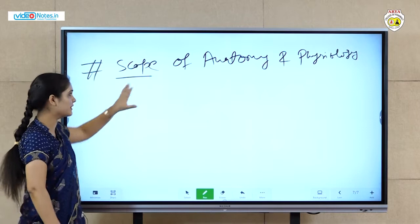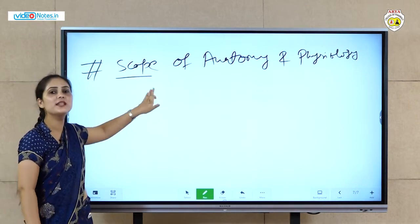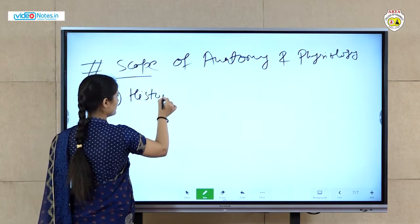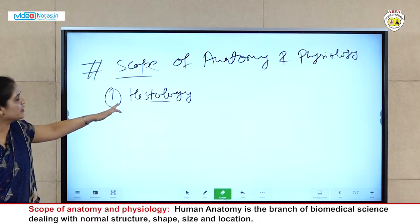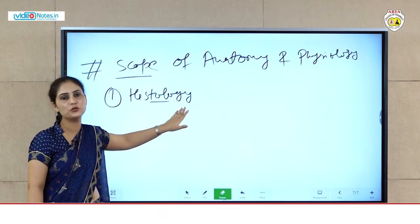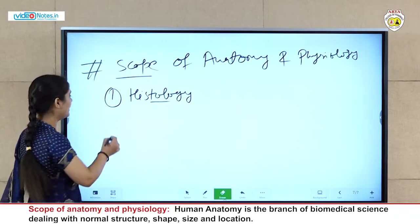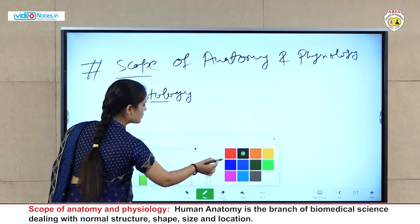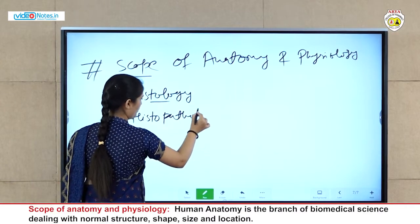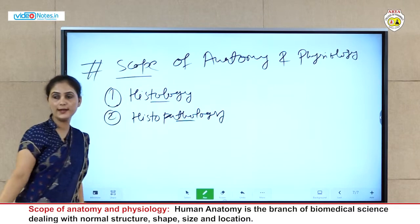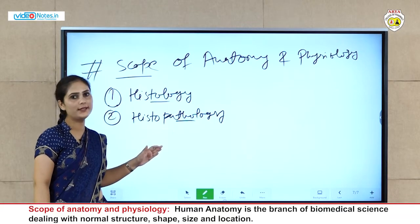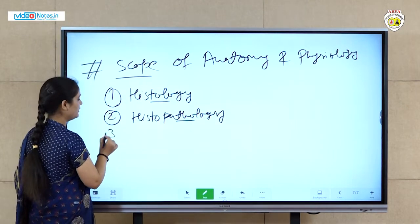Next, the scope of anatomy and physiology — scope means its various branches. The first branch is histology, which means the study of tissues. The second branch is histopathology, which is the study of tissues for signs of disease.